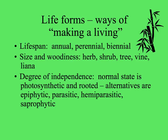For lifespan: if a plant lives a year, reproduces, and dies, it's called an annual. If it lives and reproduces many times through its lifetime, it's called a perennial. The word biennial means it takes two years of growth to reach reproductive size, then it flowers and dies.